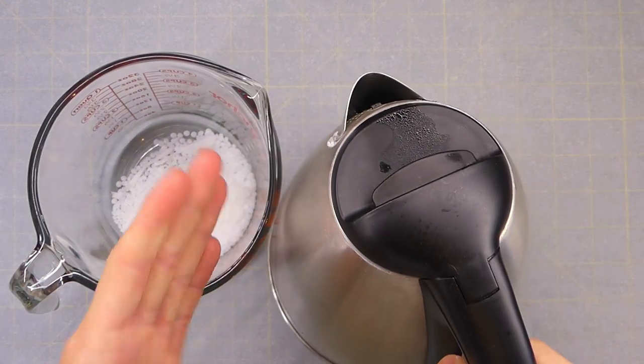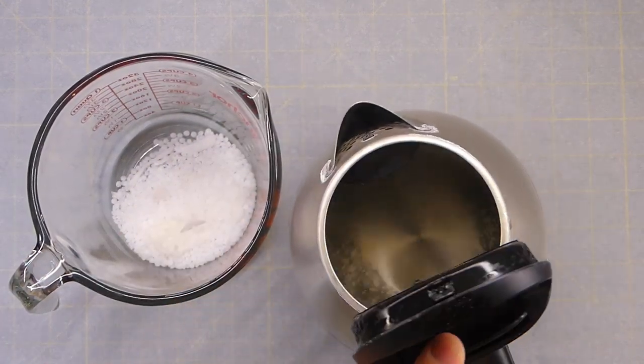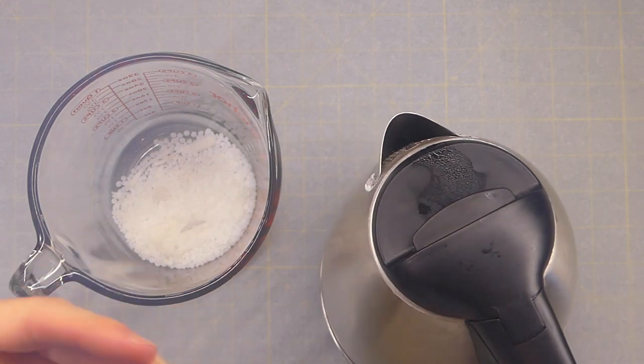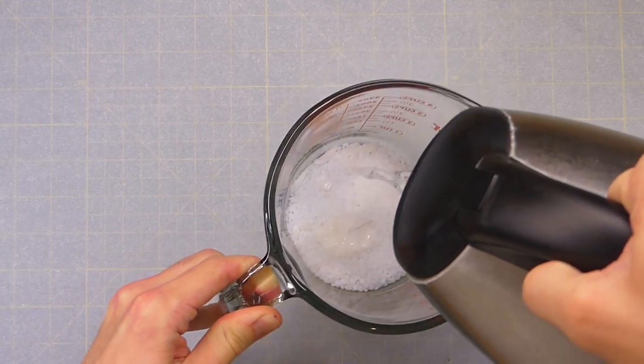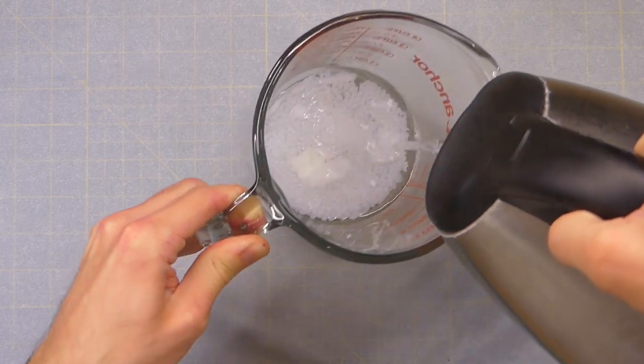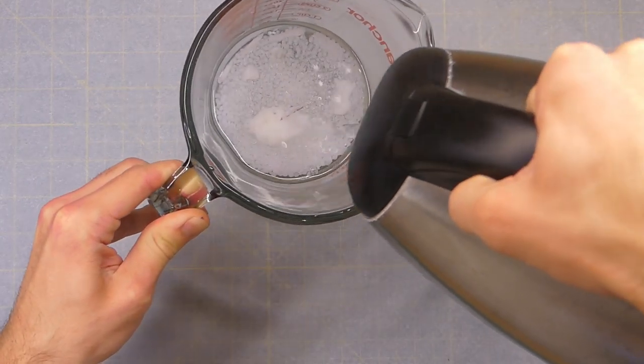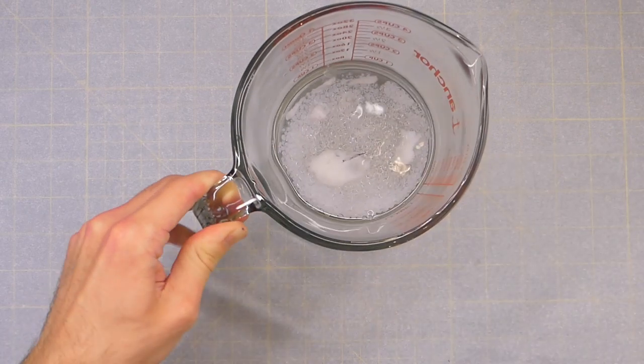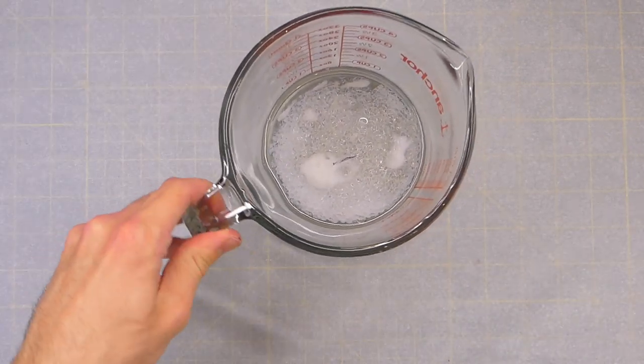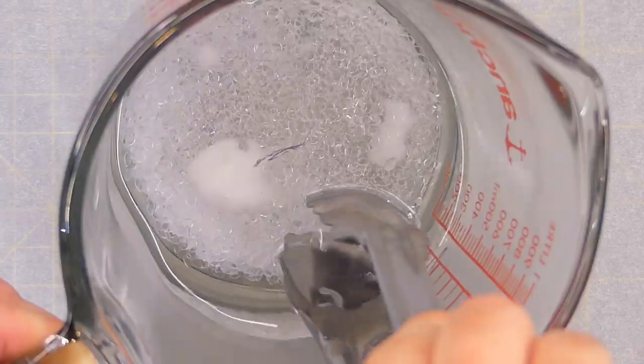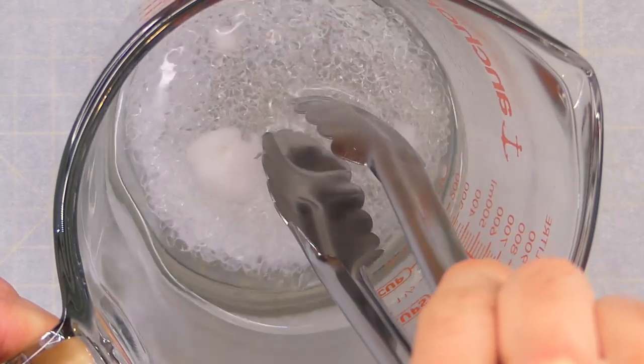Once we have our InstaMorph in there which looks actually a lot like rice, we're gonna get our boiling hot water. I want to stress, be very careful because this is boiling hot and the steam is probably gonna fog up the camera lens. We're gonna pour some hot water in here to melt our InstaMorph. Just enough to cover it and you can see very quickly it's turning clear. That's what it does, that's how you know it's hot. It's becoming mushy and it's all melting together.